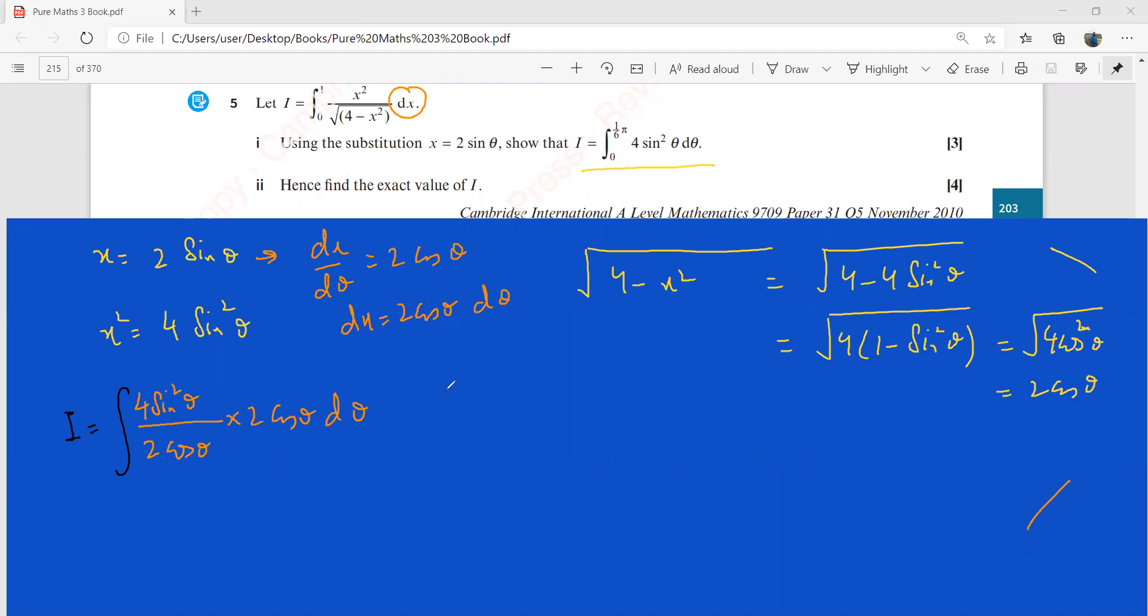And then comes the turn for changing the limits. When I have x equal to 0, this 2 sin theta is going to be 0, so your theta is 0. So this lower limit is going to be 0. When we have x equal to 1, you have 2 sin theta equal to 1, your sin theta is equal to 1/2, and your theta is going to be pi by 6.